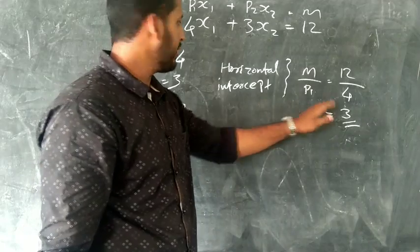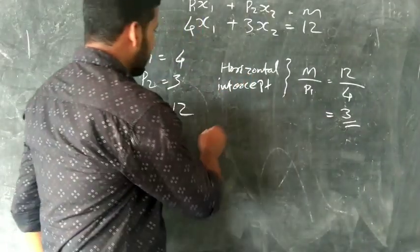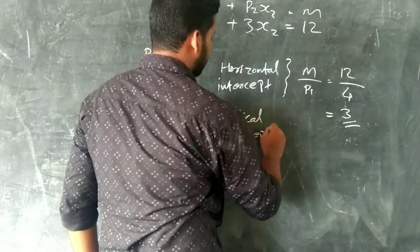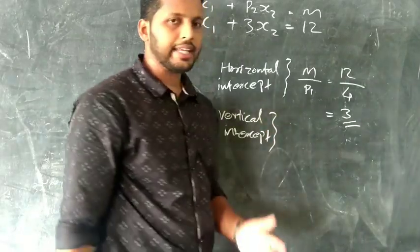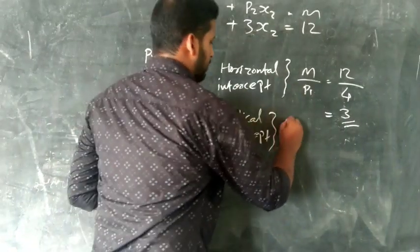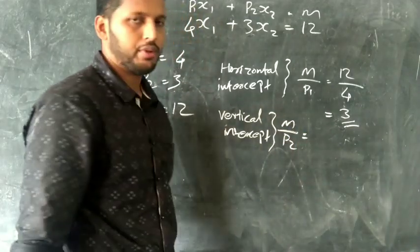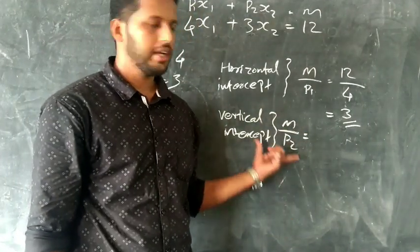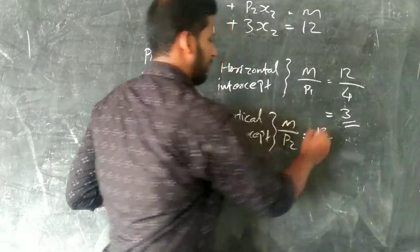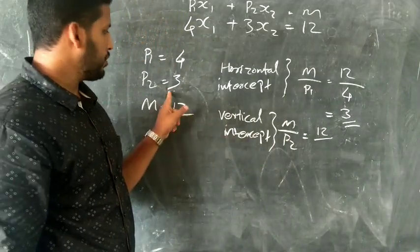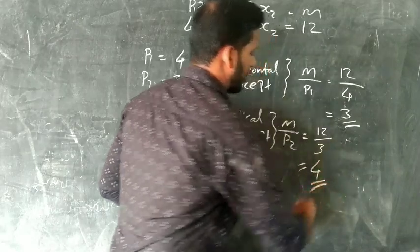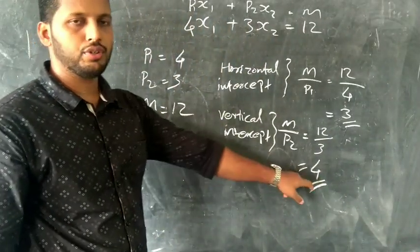We have 3 in the horizontal intercept. For the vertical intercept, it is M by P2. M is 12, by P2 which is equal to 3, so the answer is 4. Vertical intercept is equal to 4.